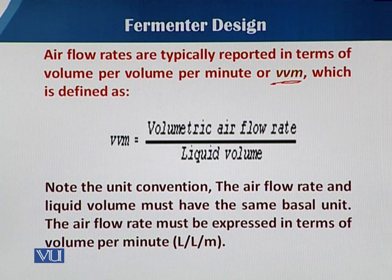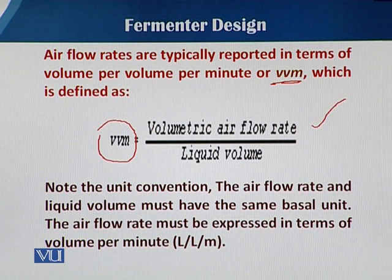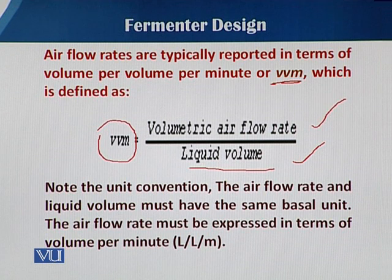If we want to calculate the flow rate in terms of VVM, the volumetric air flow rate is how much liters of air is supplied per unit time to the fermenter, and then there is the liquid volume — how much liquid volume in liters. Both are in liters, so it is liter over liter.